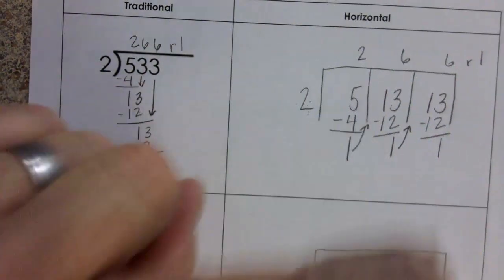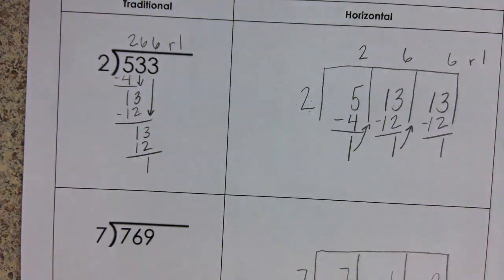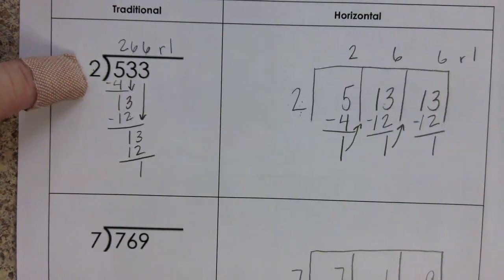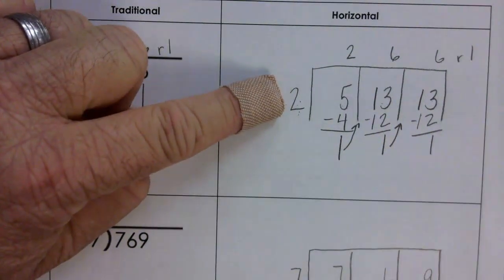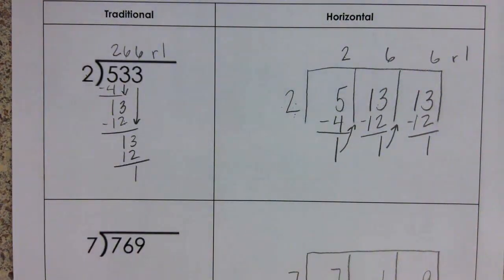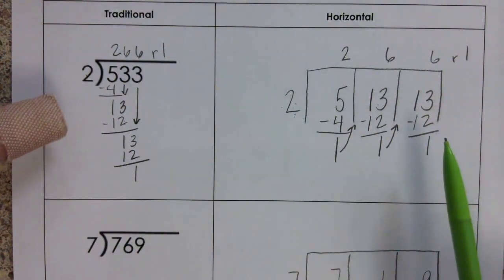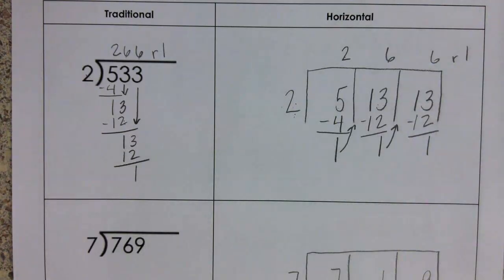I'm going to teach both ways. I want them to have the one way that works for them. If that's traditional, great. If it's horizontal, that's awesome. They can use either of these moving forward in 5th grade and into 6th. Hope that helps. As always, let me know if you have questions.